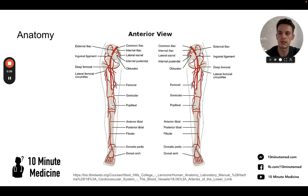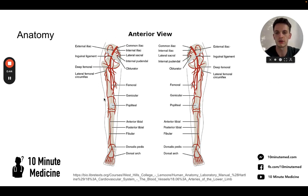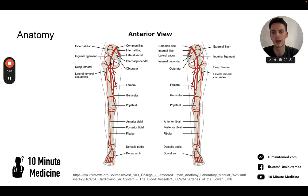Starting with the basic anatomy to be aware of: you have your arterial system of the lower limb, starting with the common iliac artery branching from the abdominal aorta, which then splits into the internal and external iliac artery, continuing into the lower limb and becoming the superficial femoral artery, from which branches the deep femoral artery into the deeper structures of the thigh.